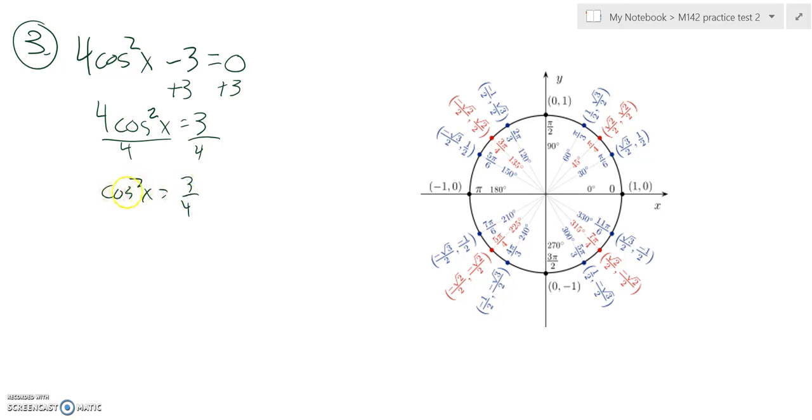Now I'm going to square root it, get rid of that square. So if I square root both sides, plus or minus comes in with it. So I have cosine of the square, it's gone, equals plus or minus the square root of three over the square root of four. The square root of four is two. So cosine of my angle can give me either plus or minus root three over two.